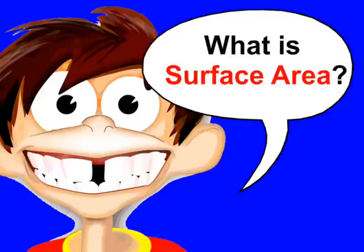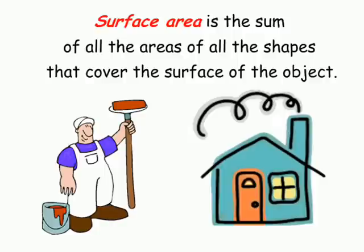So what exactly is surface area? Surface area is the sum of all the areas of all the shapes that cover the surface of the object.